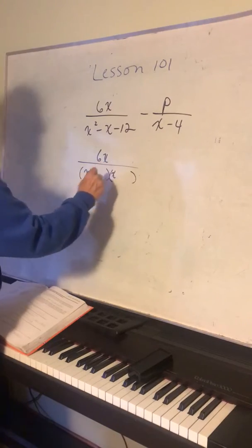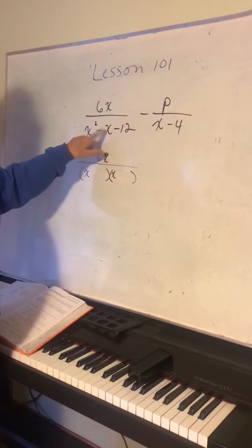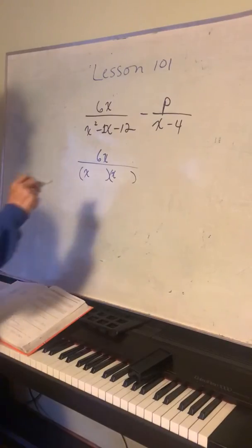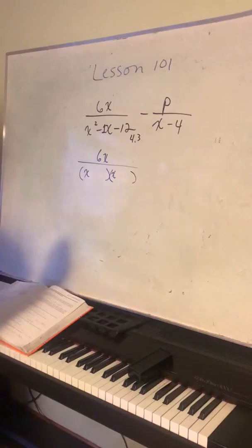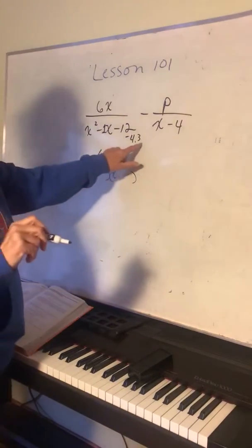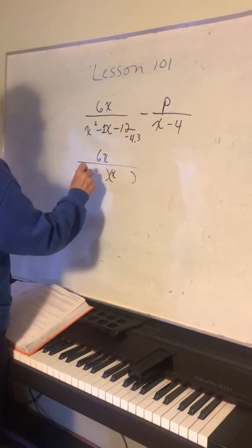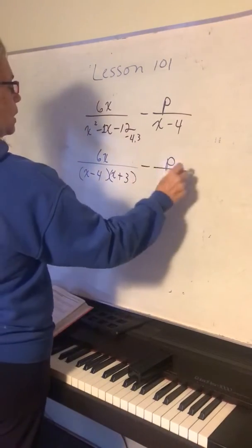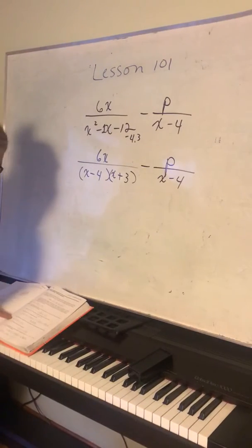Let's go ahead and do this one. The denominator multiplies to negative 12 and adds to negative 1, with a 1 in front. So we use 4 and 3, with the 4 being negative — adding them gives negative 1, multiplying gives negative 12. So the factored form is x minus 4 times x plus 3.